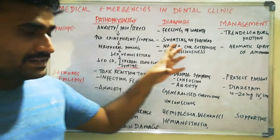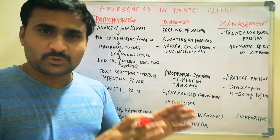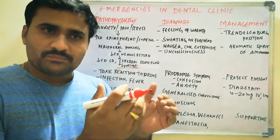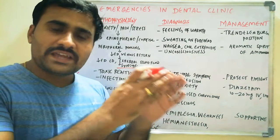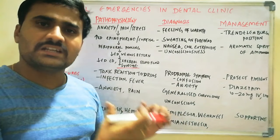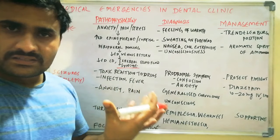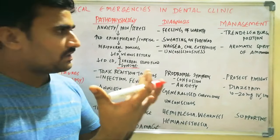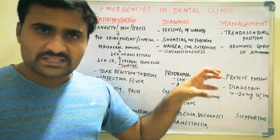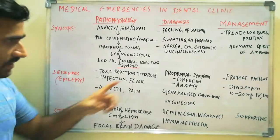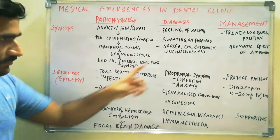Syncope is the most common medical emergency and generally doesn't require specific treatment beyond placing the patient in the Trendelenburg position — that is, legs elevated — to increase venous return and cardiac output, resulting in greater cerebral blood flow. If not improved, give aromatic spirit of ammonia, which acts as a respiratory stimulant. With these measures, syncope will resolve.